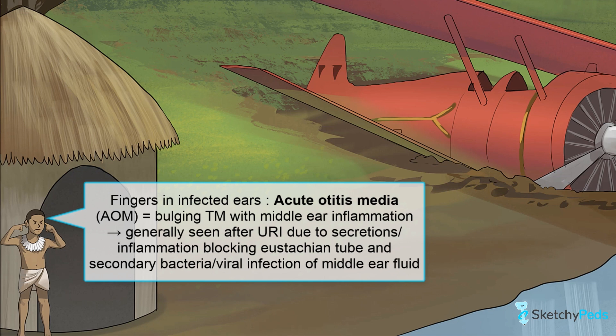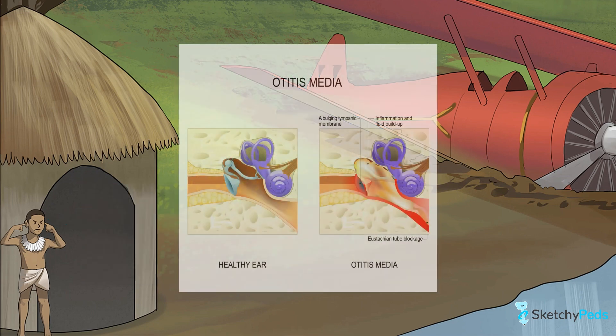AOM is characterized by bulging of the tympanic membrane, or TM — aka the eardrum — along with signs of middle ear inflammation. Let's take a minute to review some ear anatomy. The middle ear space includes three ossicles behind the TM: the stapes, incus, and malleus, and the eustachian tube, which connects the middle ear space to the back of the nose.